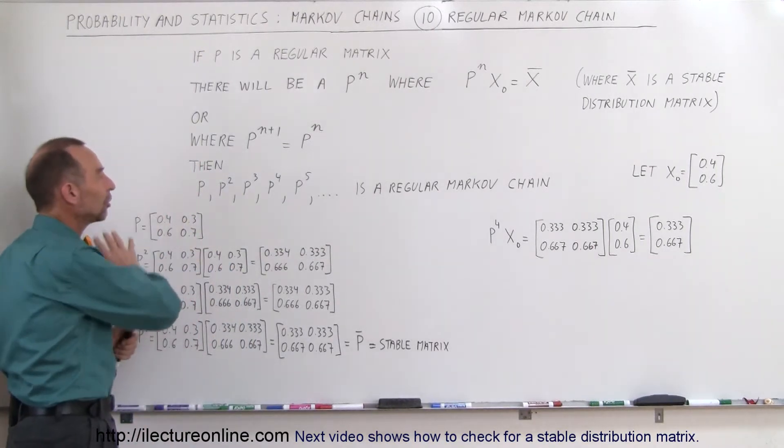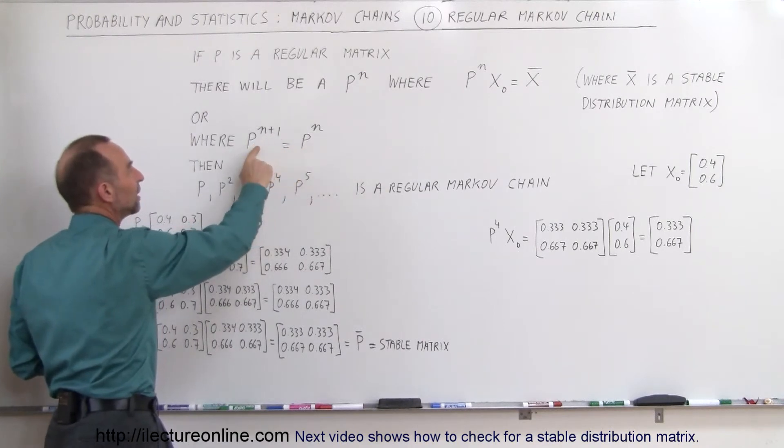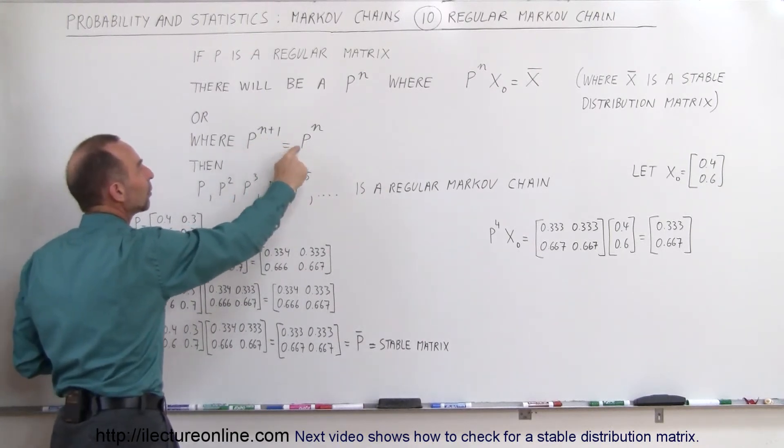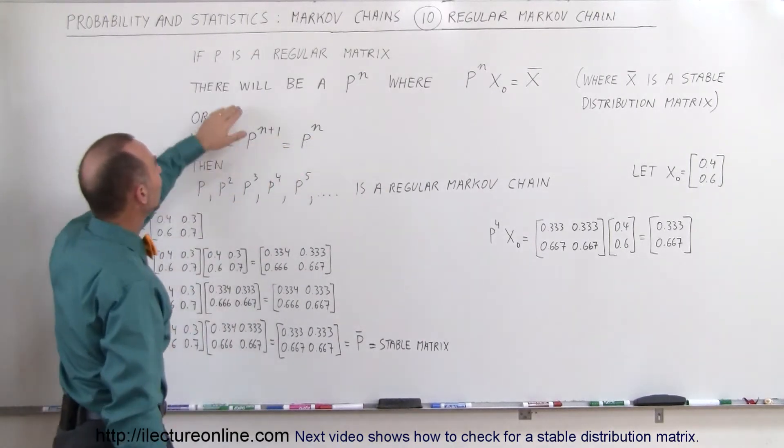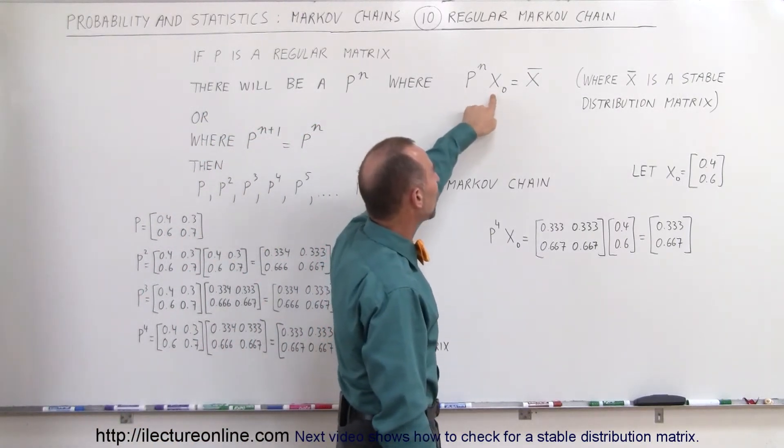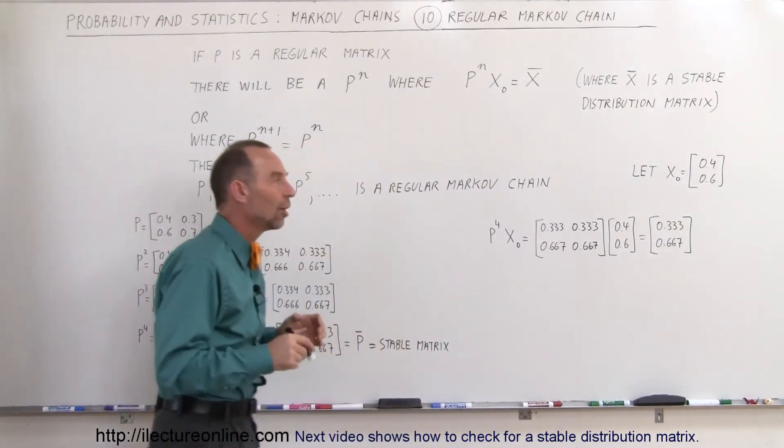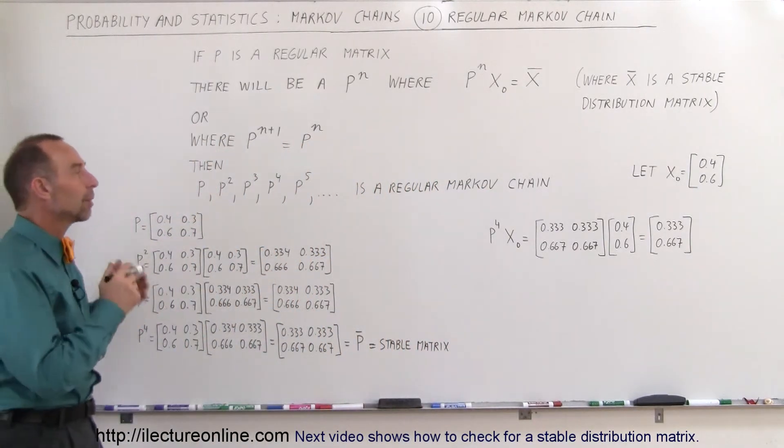In other words, if we get to the point we have a stable P matrix so that P^(n+1) equals P^n, and if P^n is such that when we multiply it times the initial state, we get the stable state or stable distribution matrix, we have ourselves a regular Markov chain.